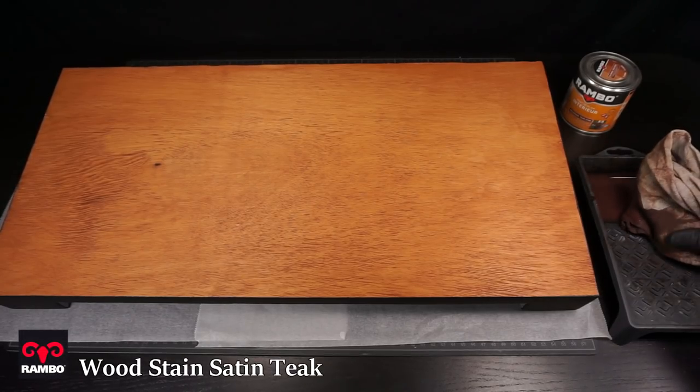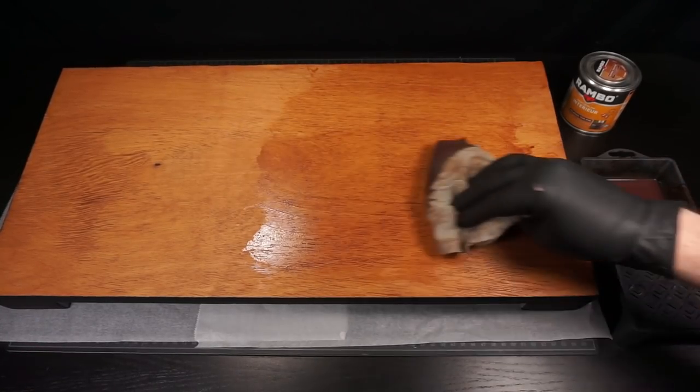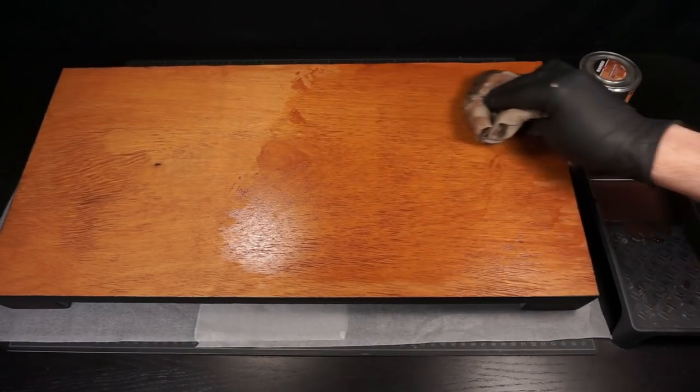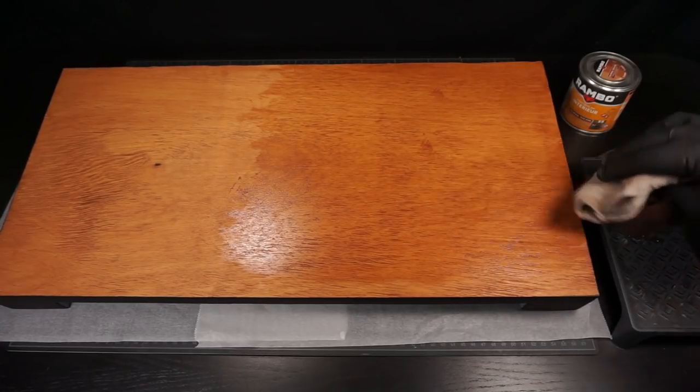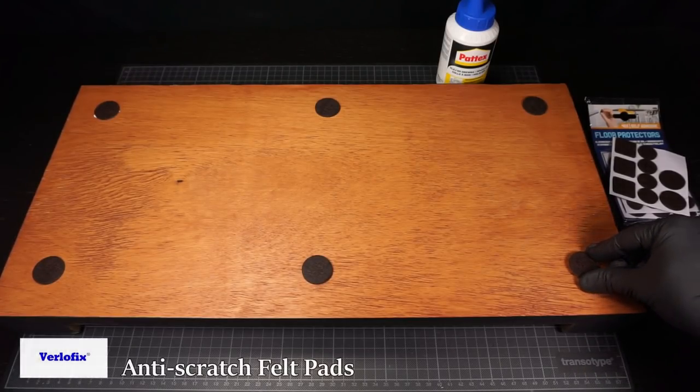The underside of the board is then given a layer of wood stain. No one will ever know this, but you know it's there and that's what matters. I've also added a few felt pads to give it some stability.